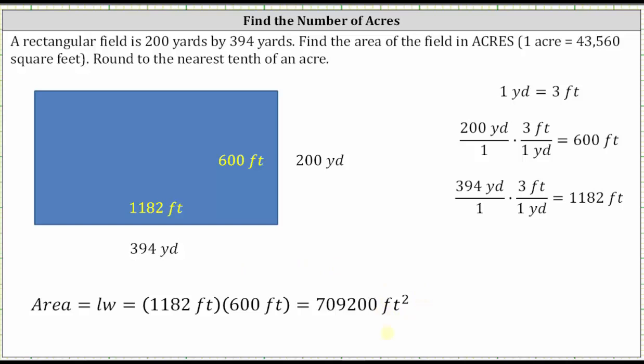Now that we know the area in square feet, we use the conversion one acre equals 43,560 square feet to determine the area in acres.